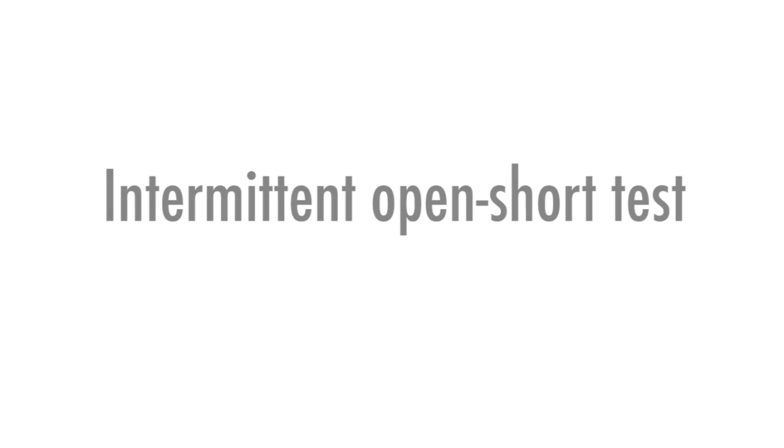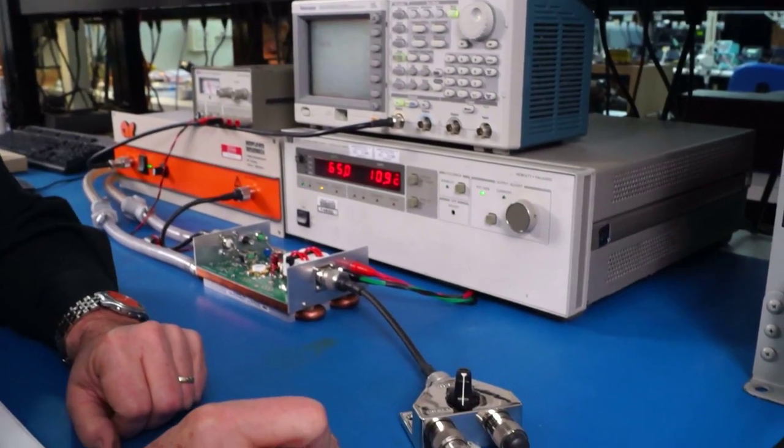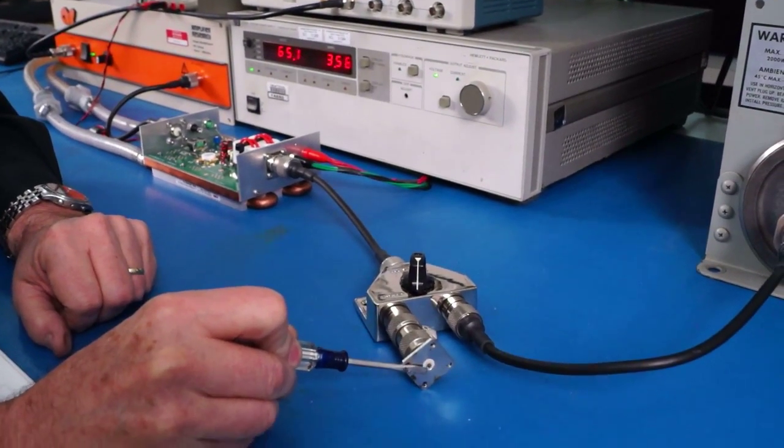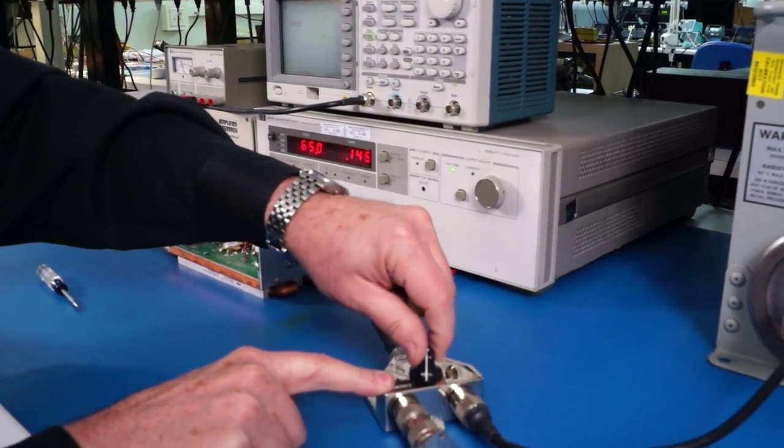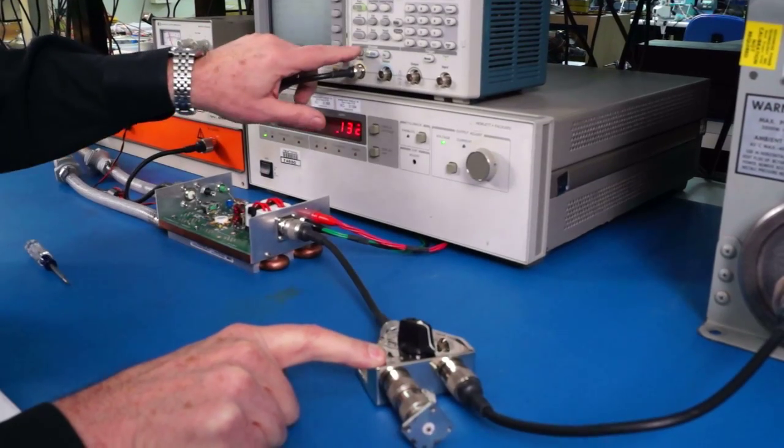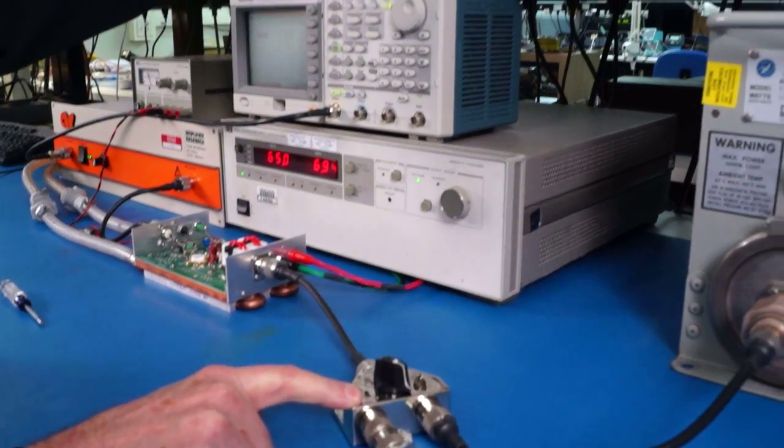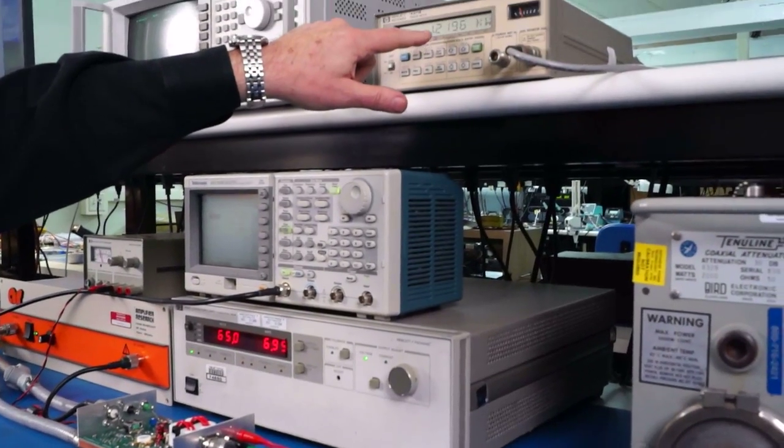The first test is the intermittent open short test. This is made more visible by using a screwdriver to short out the open center conductor of the output coax. After the test, the amplifier is returned to the 50 ohm load to check the output. It is still the same 1200 watts.